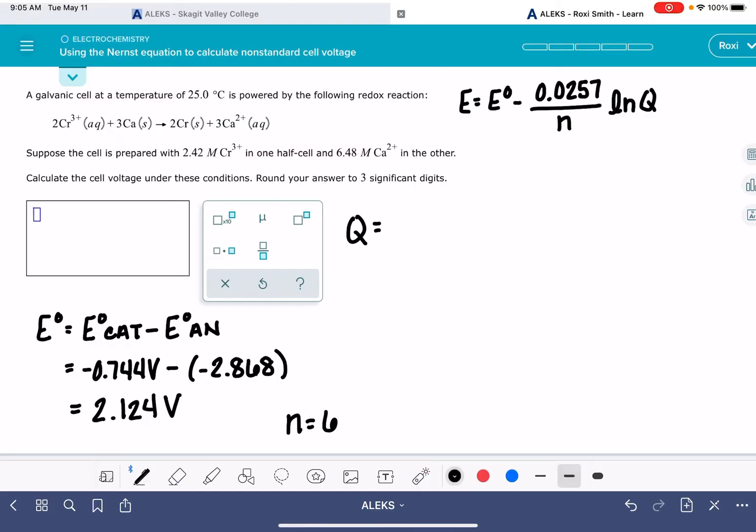For this reaction, our product is the calcium 2 plus ion, and that has a stoichiometric coefficient of 3, so it needs to be cubed. We're leaving out the chromium because it's a pure solid. Our reactant is the chromium ion, Cr3 plus. It's going to be squared because its coefficient is 2. And we're leaving out the calcium because it's a solid.